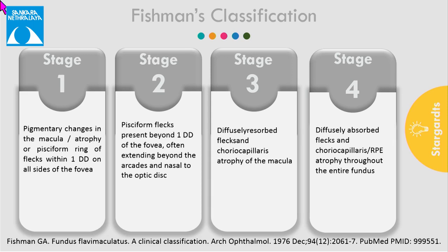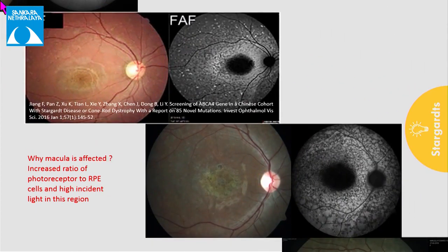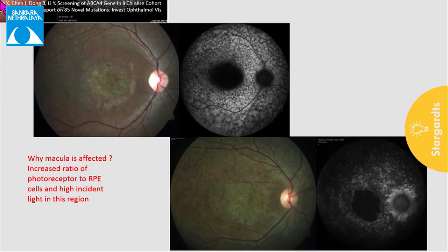In the era of confusion between Stargardt's disease and fundus flavimaculatus as the same or different entity, Fishman et al. gave a clinical classification of Stargardt's disease into four progressive stages. Stage 1: pigmentary changes at the macula with a metallic sheen and a pisciform ring of flecks within the first one disc diameter from the fovea. Stage 2: pisciform flecks extending beyond the arcades and nasal to the optic disc. Stage 3: diffusely distributed flecks with RPE atrophy at the macula. Stage 4: diffusely distributed flecks with RPE atrophy throughout the entire fundus.